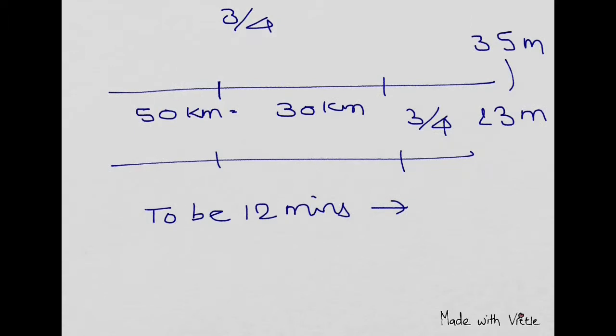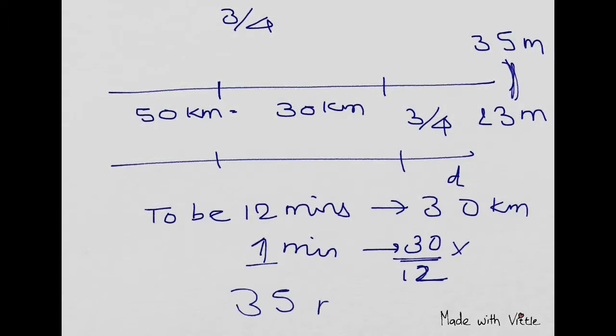Distance traveled was 30 kilometers, because he got late by whatever he traveled 30 kilometers. To be late by one minute, it's just 30 by 12.